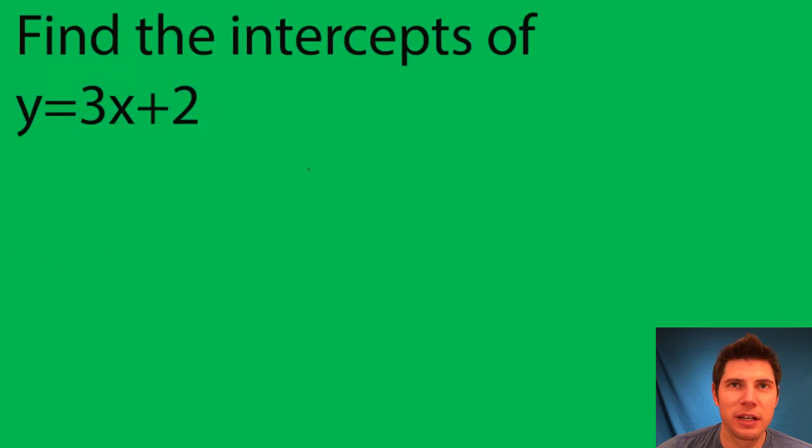So the way that I like to do these is make an xy table and I make x equal to 0, which will give me the y-intercept, and I make y equal to 0, which will give me the x-intercept.